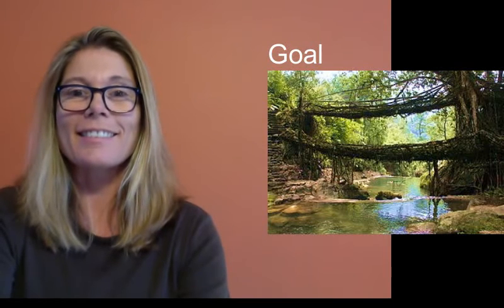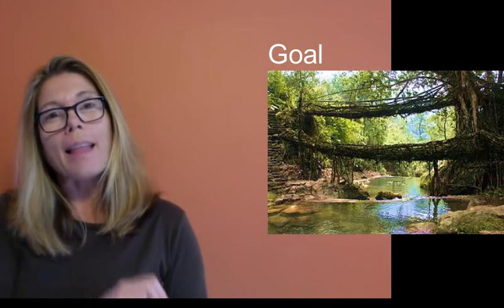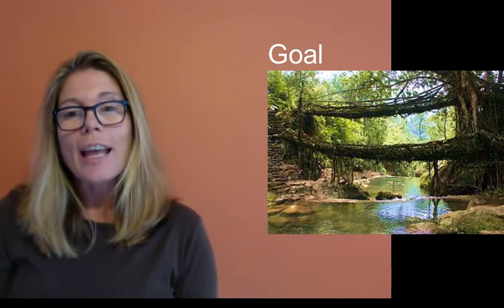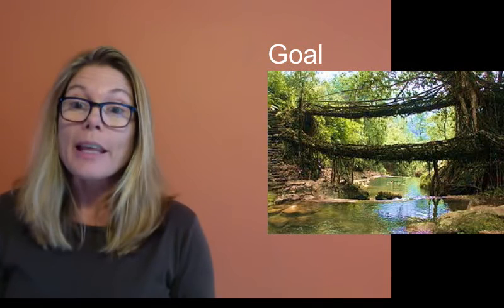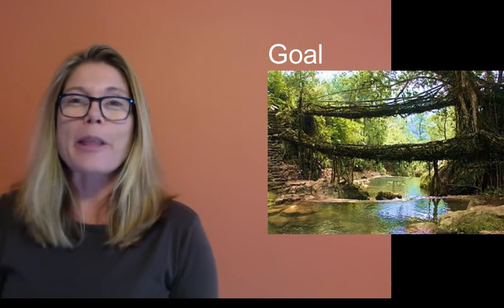Let's summarize. The function is the simplest description of an adaptation we see in nature — it's basically what nature is doing. The strategy explains in general terms how that function is achieved. The mechanism requires a thorough understanding and research in the primary literature to explain how the strategy works. Our eventual goal is to build a function bridge linking a biological strategy to a human design challenge in the built world — to emulate nature's genius and help build sustainable human designs. Function, strategy, and mechanism help us build that bridge.